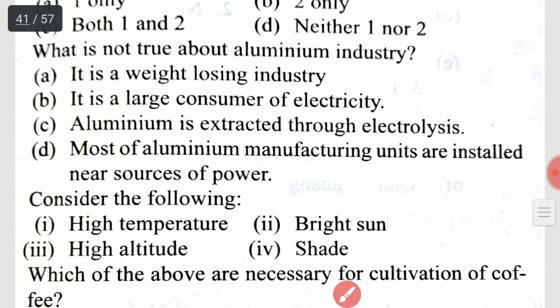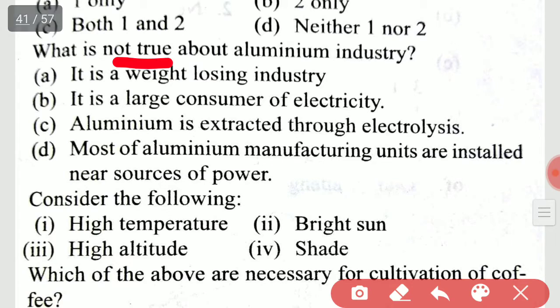What is not true about the aluminium industry? It is option C: aluminium is extracted through electrolysis — this is not true as stated.